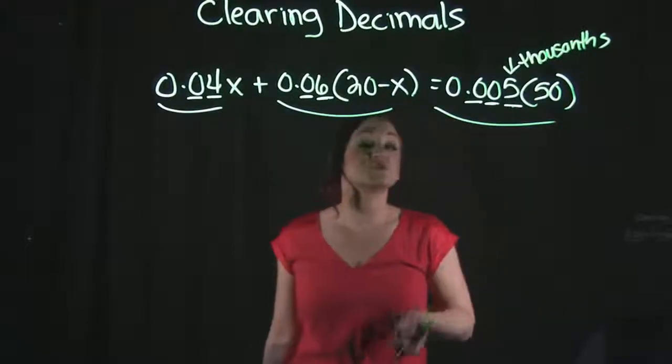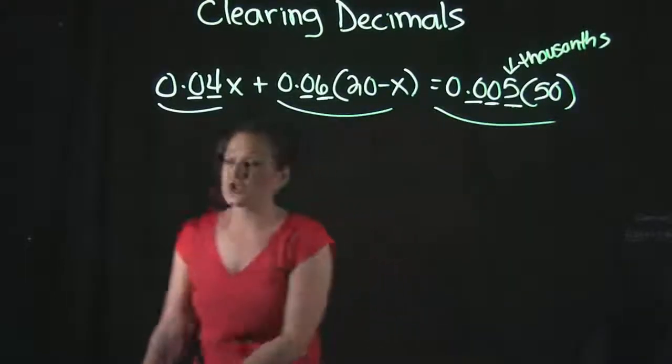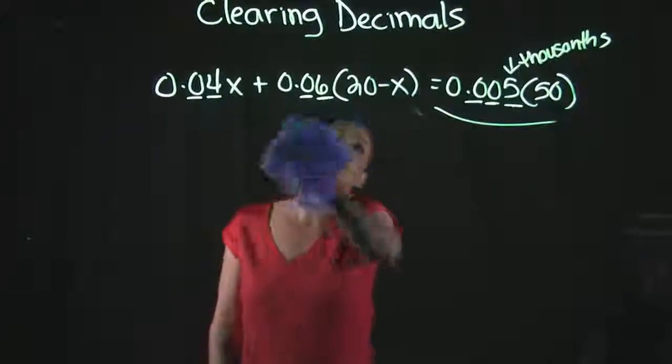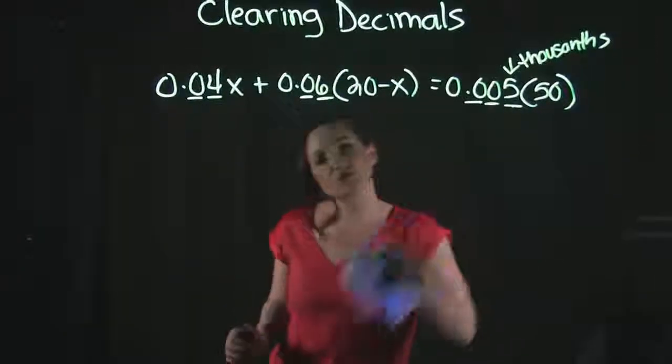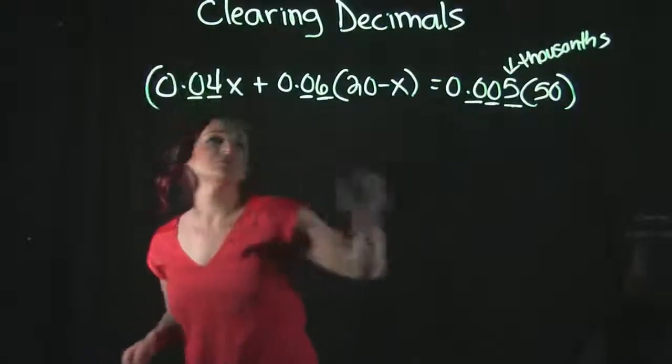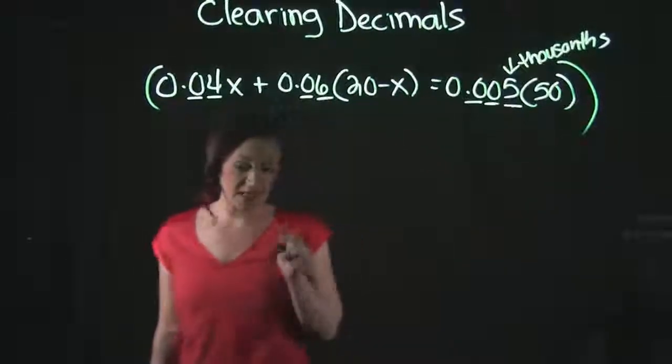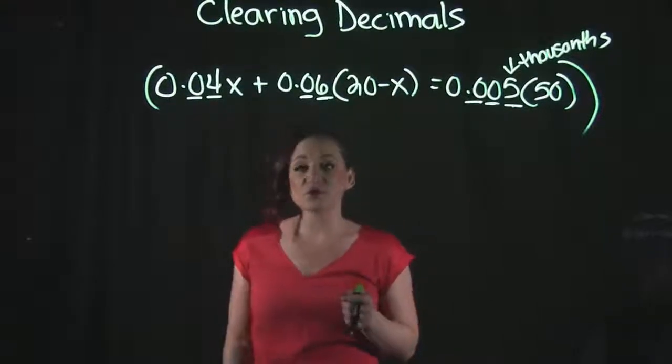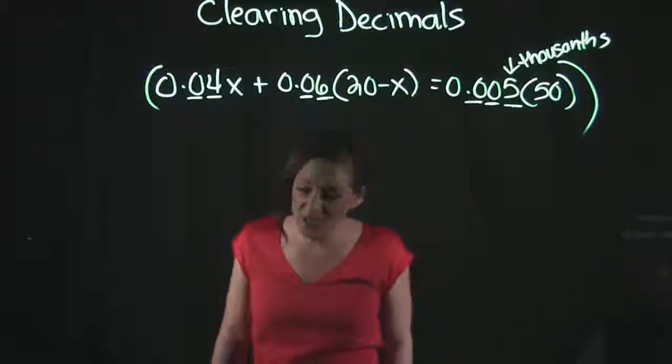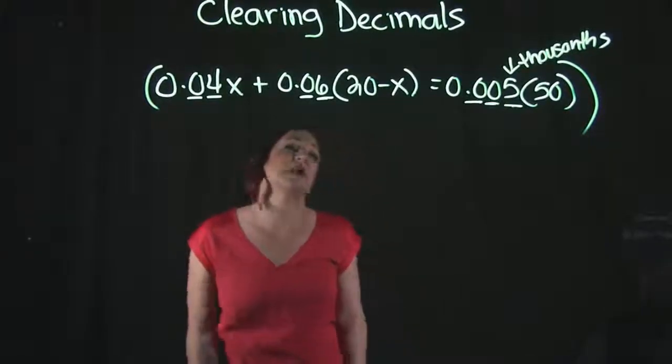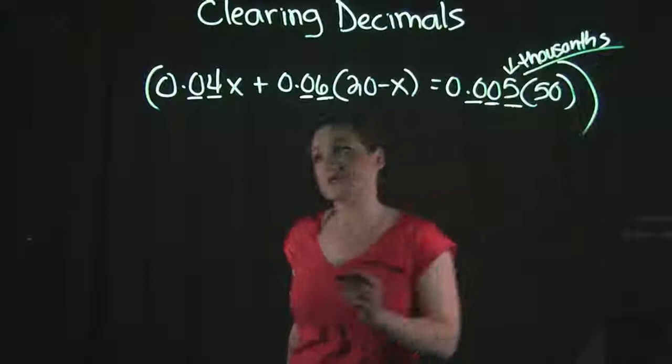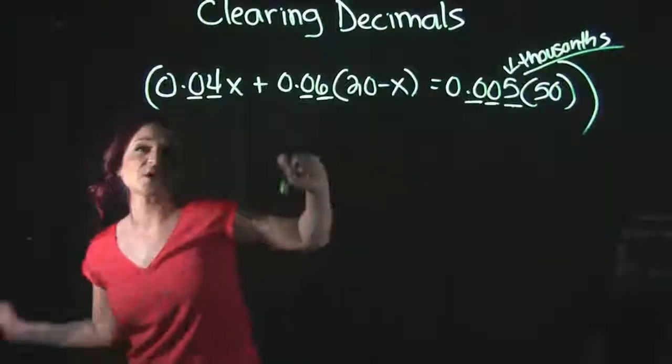So what I'm going to do in order to clear decimals, after we find which term has the most decimal place values in it, and we find out what that place value is, we are going to multiply the entire equation by that place value. And what I mean by that, three decimal place values stands for thousandths.